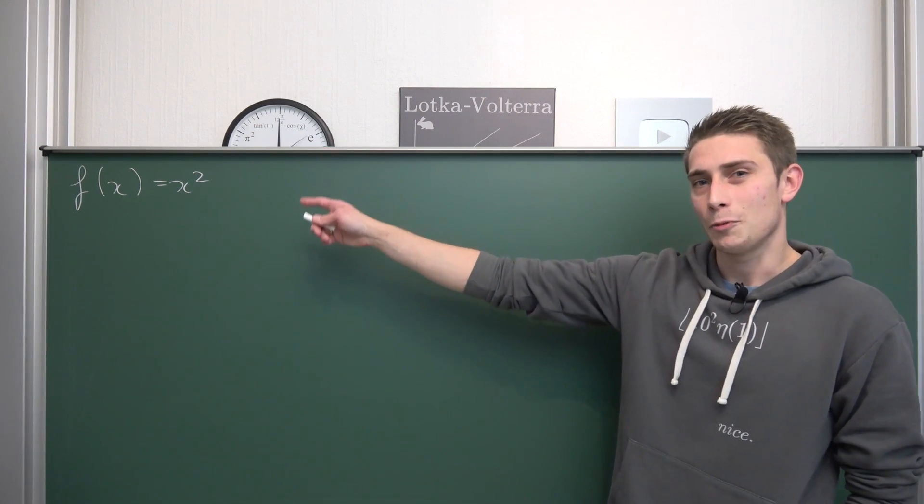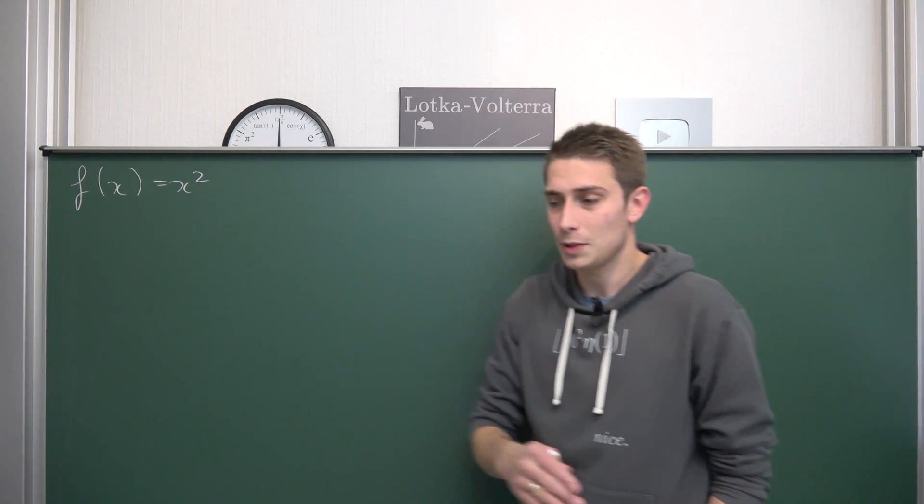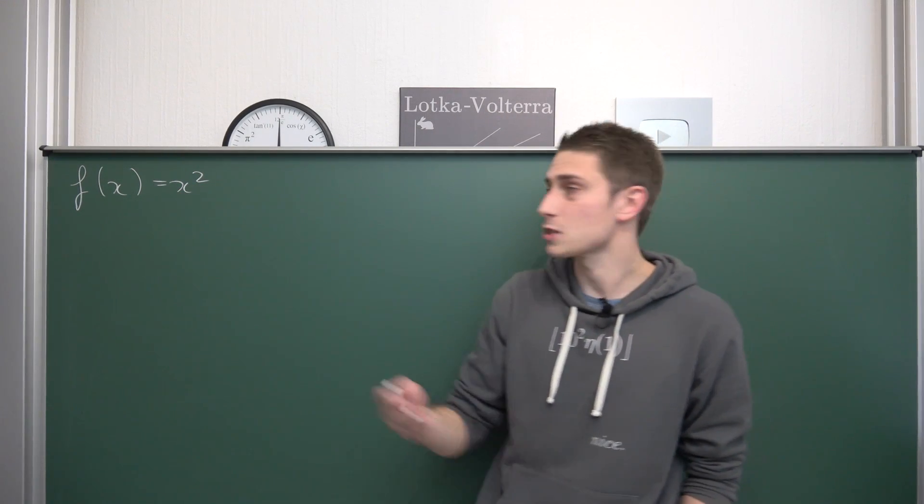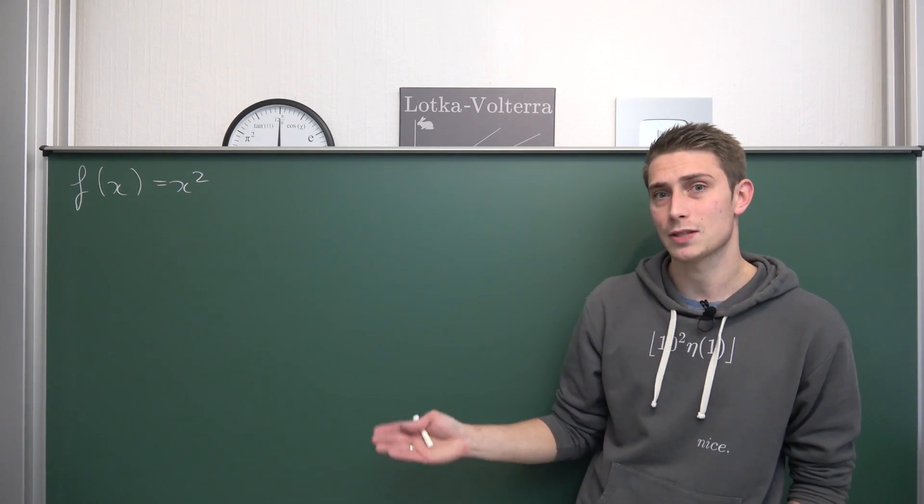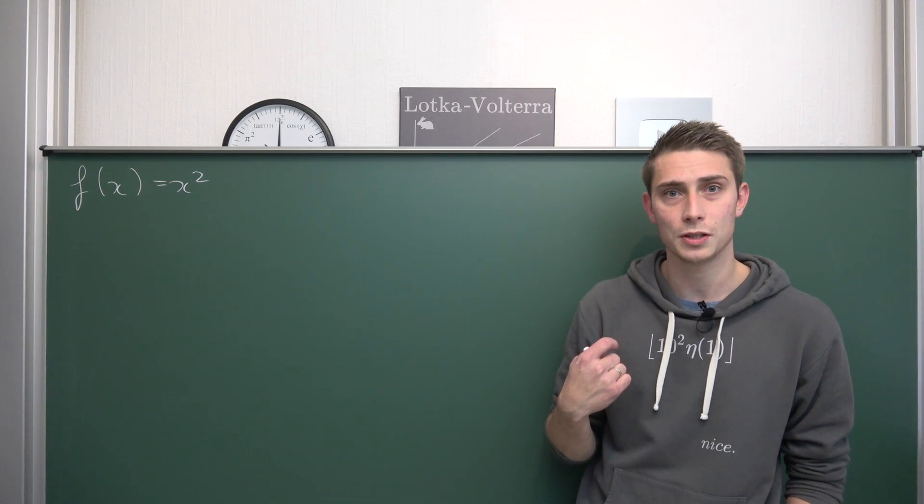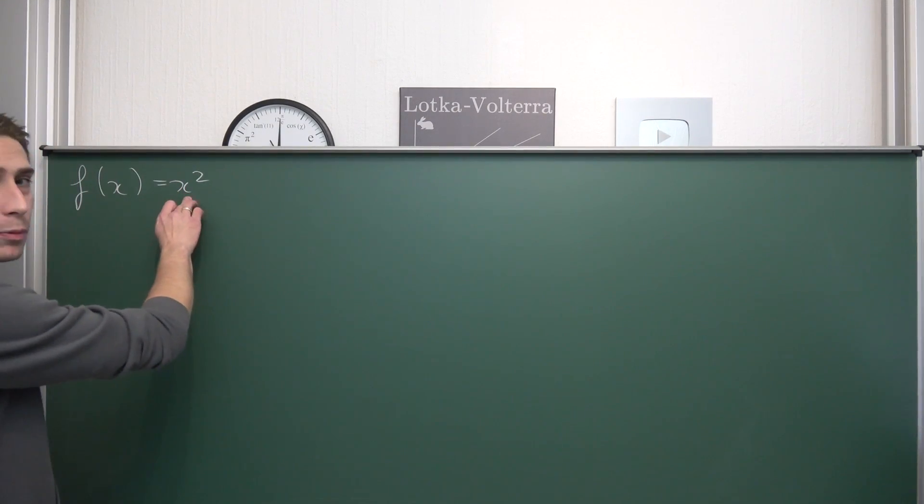We want to sketch this at first, because this looks kind of curious. This looks completely different to our functions of the first degree, our linear functions. Hence, at first, we are going to create ourselves a table of values, and then plot it into a coordinate system, and see how this function actually behaves when putting x values in.